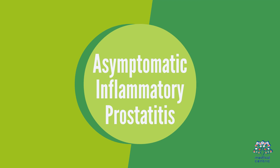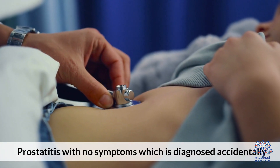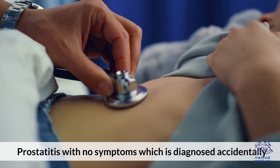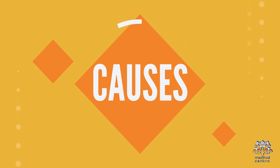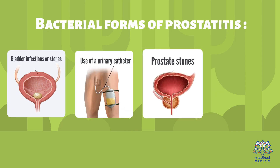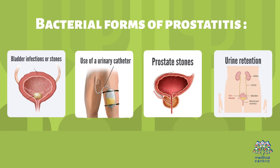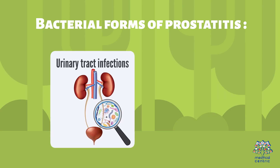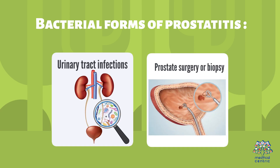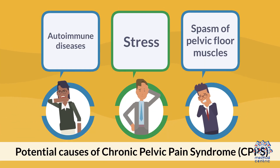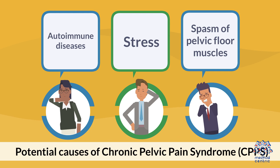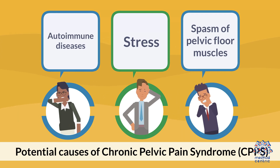Asymptomatic inflammatory prostatitis is prostatitis with no symptoms and is diagnosed accidentally. Causes of bacterial forms of prostatitis include bladder infections or stones, use of urinary catheter, prostate stones, urine retention, urinary tract infections, prostate surgery or biopsy. Potential causes of chronic pelvic pain syndrome (CPPS) include autoimmune diseases, stress, and spasm of pelvic floor muscles.